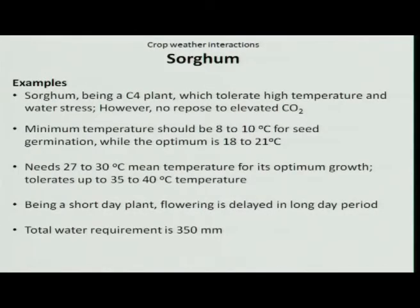Let us see crop-weather interaction for sorghum. It is one of the important dryland crops grown in semi-arid regions of the world. Based on photosynthesis, it belongs to a C4 type plant. In India, it is cultivated during the kharif as well as the rainy season. Based on photoperiod, sorghum belongs to a short day plant. Two factors responsible for its weather requirement are the cardinal values and the origin of the species. Other factors include the nature of the seed, growth duration, photosynthesis mechanism, and photoperiod mechanism.